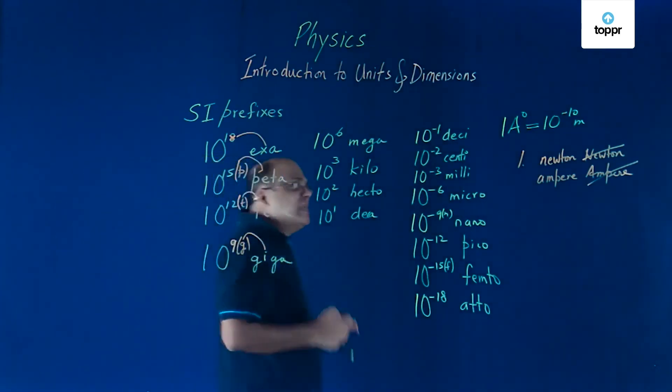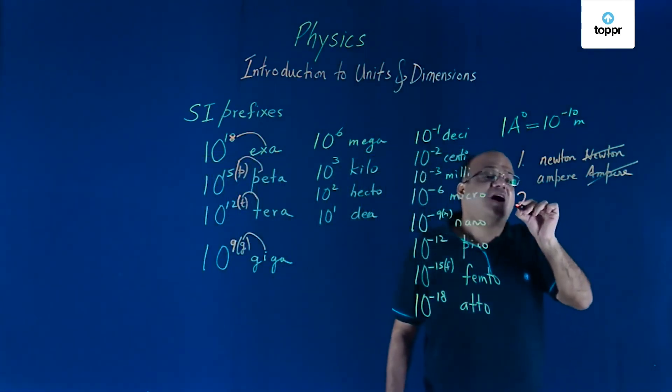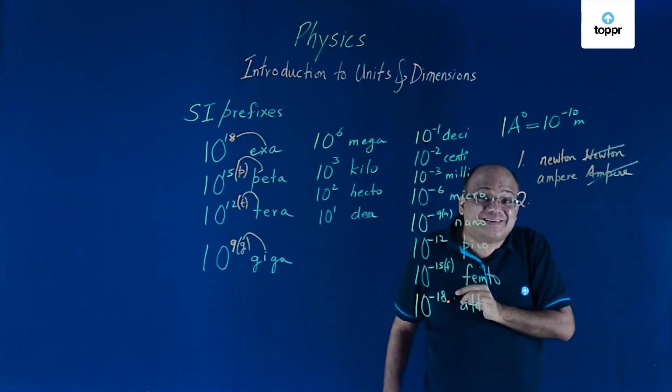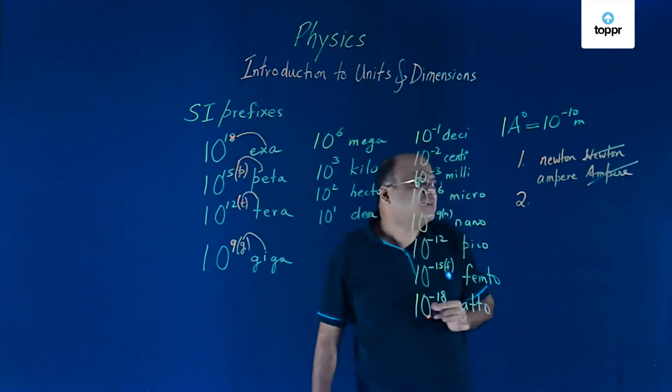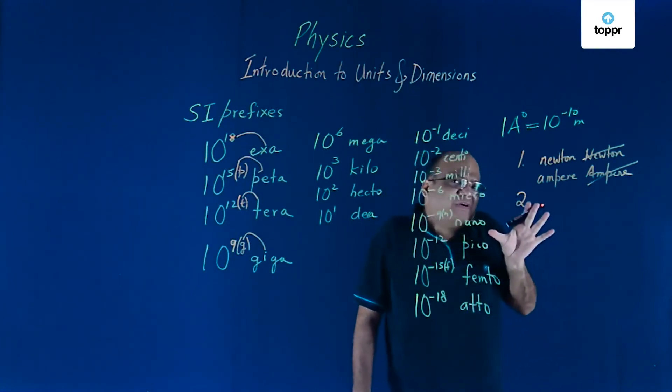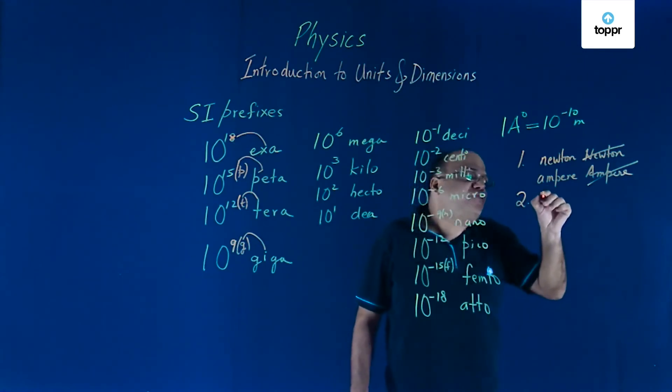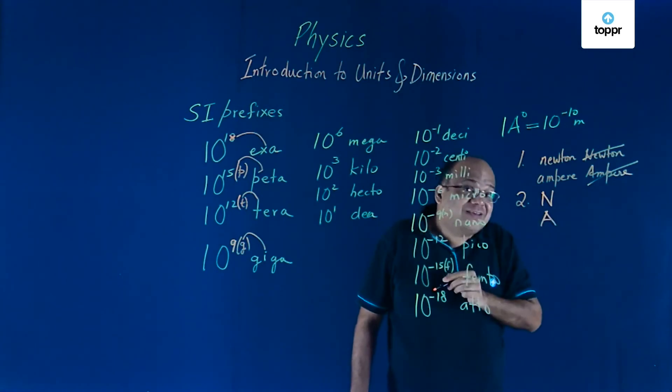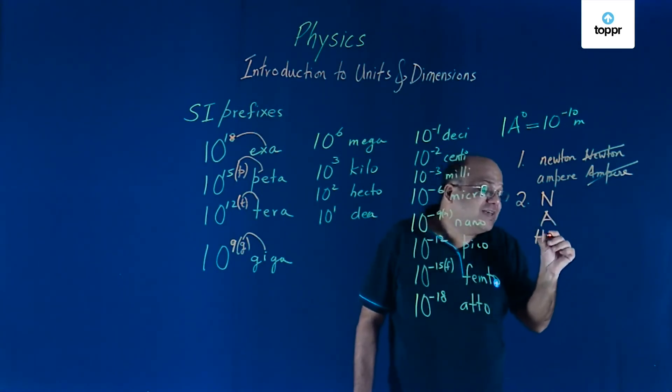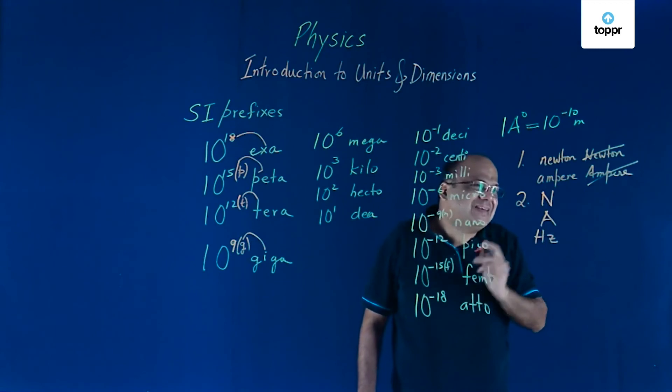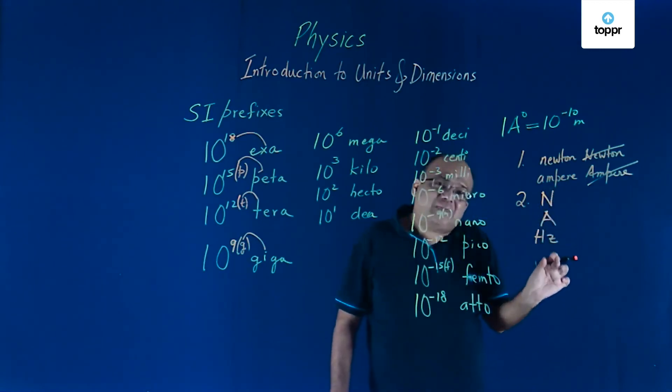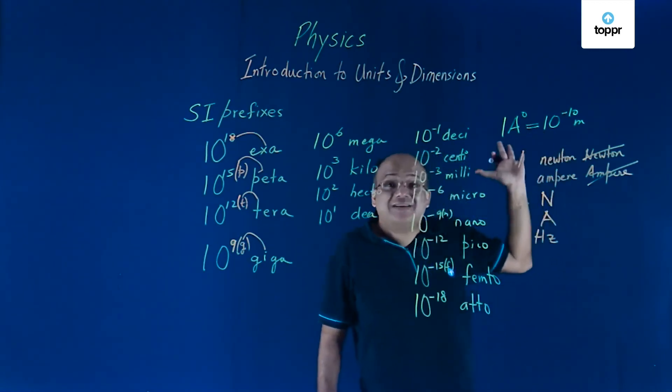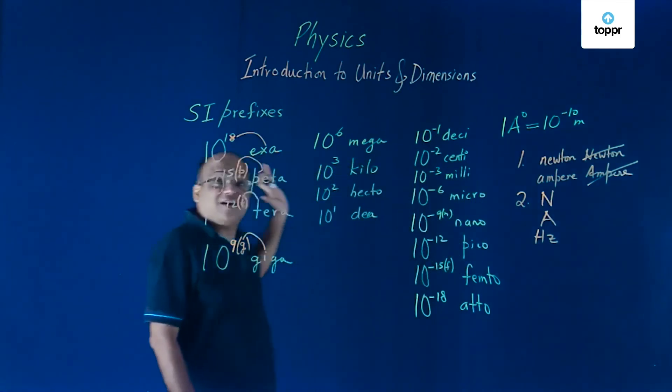Symbols of units, named after a person, start with a capital letter. All are in capitals in most cases, only when one alphabet is there, that will be capital. Unit of force, we write as N, Newton. Ampere, capital A. Hertz, H, Z. So symbols start with a capital letter. Full name does not start with a capital letter.